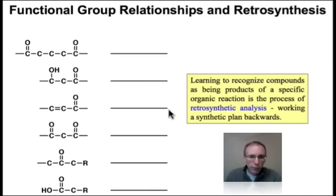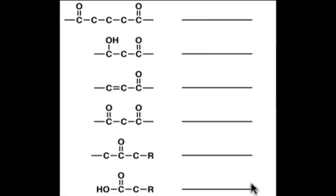Here are six different functional group relationships that we've uncovered during our study of carbonyl chemistry. In the first case, we can see a pair of carbonyl groups, and those carbonyl groups are separated by five atoms. When we see that functional group relationship, we should be thinking of the Michael reaction.